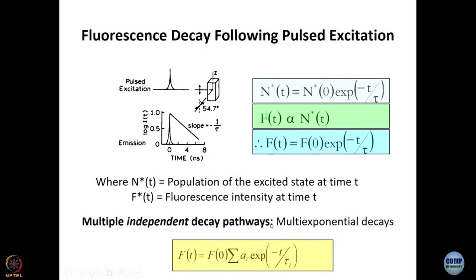More often than not the decay is not single exponential, and when it is not, the most commonly used model is a multi-exponential decay — a weighted sum of exponential terms. A multi-exponential decay will generally fit any decay you are going to handle, but it is important not to forget that it is not necessarily an appropriate model for everything. We will come back to this and show examples where multi-exponential decay is not appropriate and you have to use something more complicated, like a distribution of lifetimes or a stretched exponential.